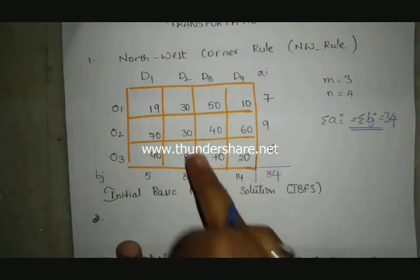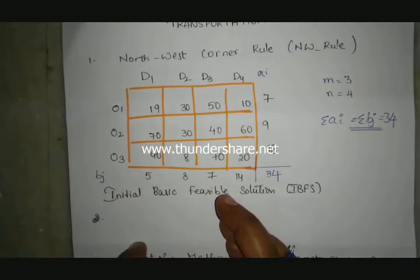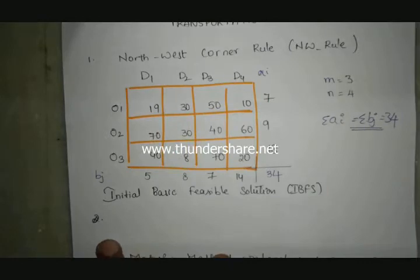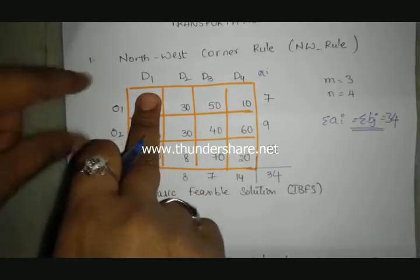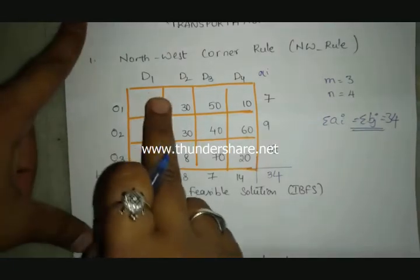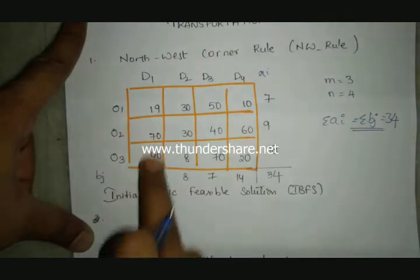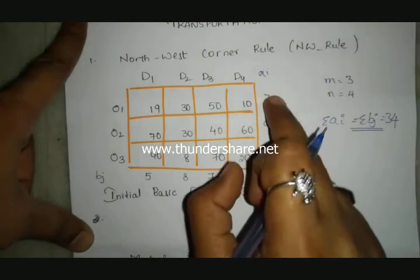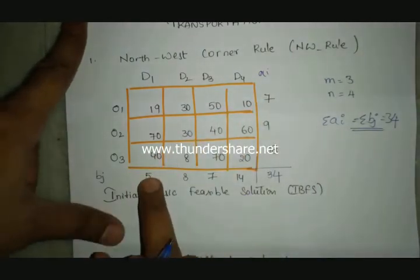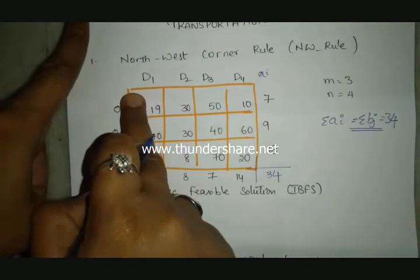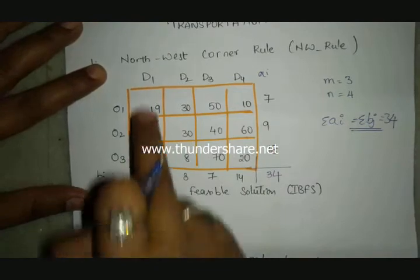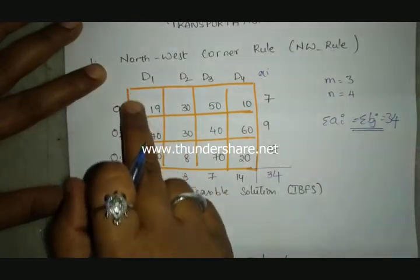First of all, check whether supply and demand are equal - whether it is balanced or unbalanced transportation problem. Seven plus nine plus eighteen is 34. Next, five plus eight plus seven plus fourteen is also 34. So summation AI equals summation BJ equals 34, so it is balanced. Now we use Northwest Corner Rule. In Northwest Corner Rule, select the northwest corner - this is the northwest corner.